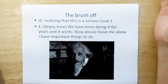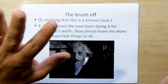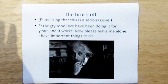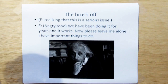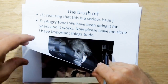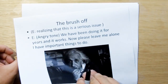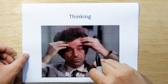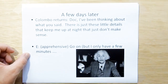Einstein, realizing this is a serious issue, says in angry tones, 'Well, we've been doing it for years and it works. Please leave me alone, I have important things to do.' That's usually when Columbo gets under the perp's skin — when they just brush him off. Columbo says, 'Okay Doc, thank you anyway. Nice talking to you. I guess you have been using it for years.' But then he thinks and thinks and never lets these things go, and comes back a few days later.